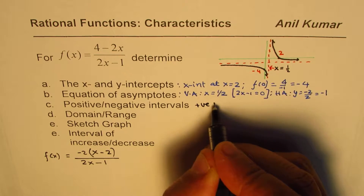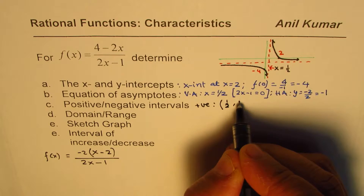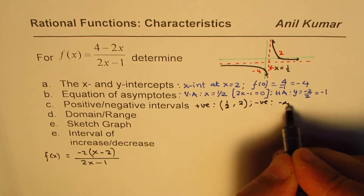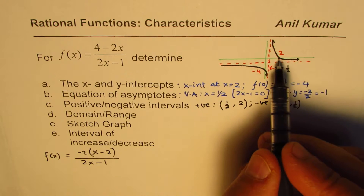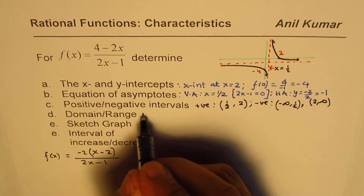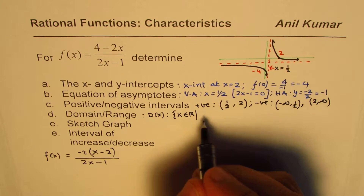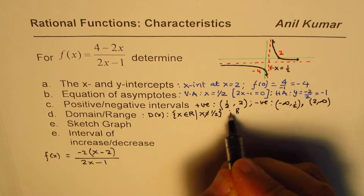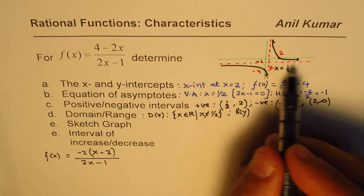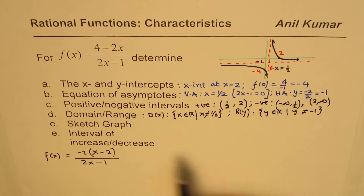The negative interval is from minus infinity to 1/2, union 2 to infinity. For domain, x belongs to all real numbers except x = 1/2. For range, since the function approaches but never reaches minus 1, the range is all real numbers where y is not equal to minus 1.